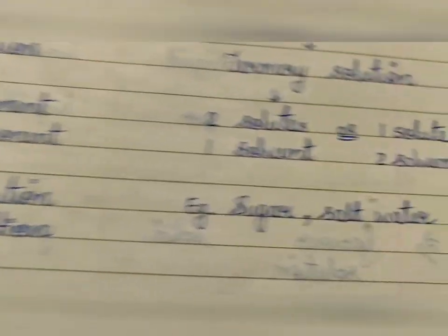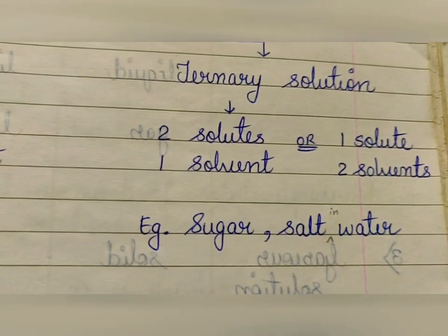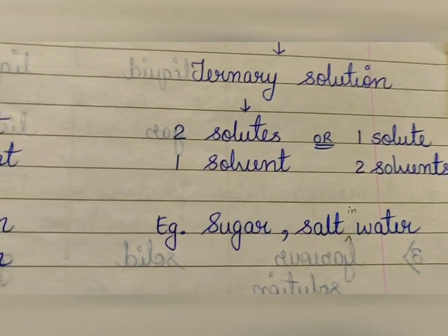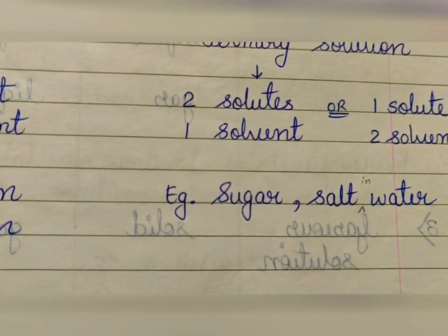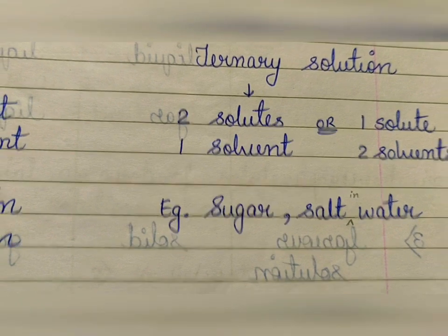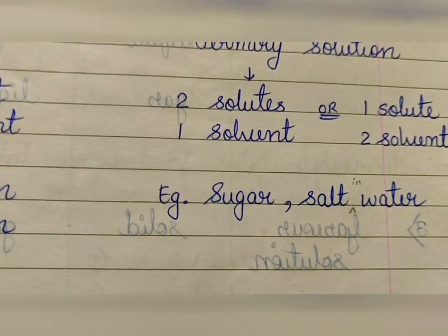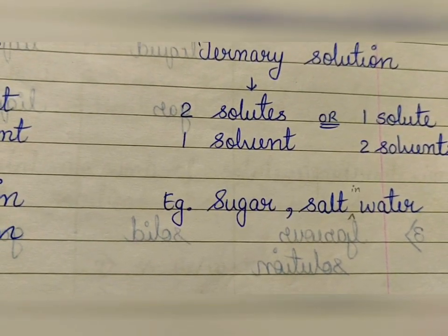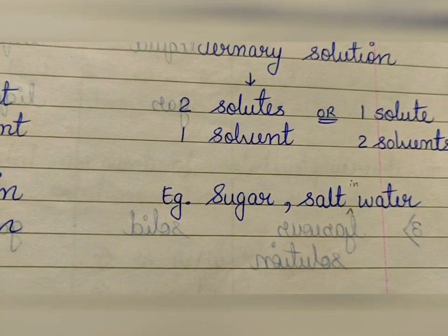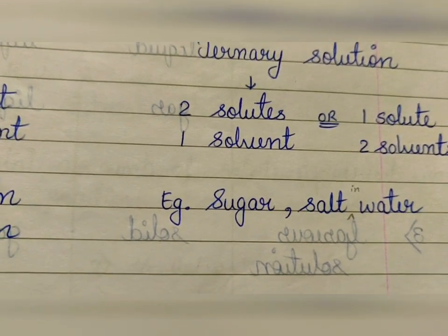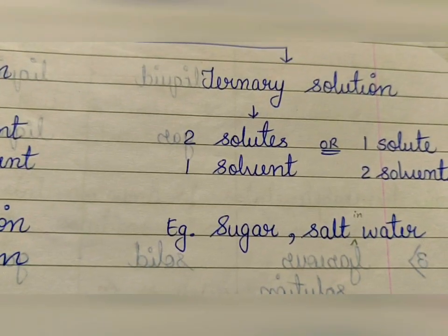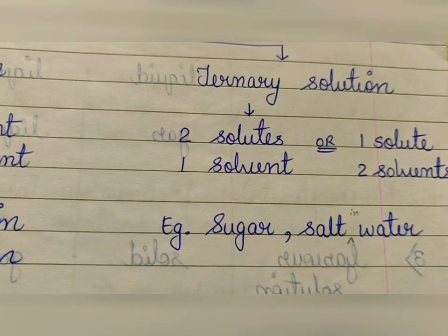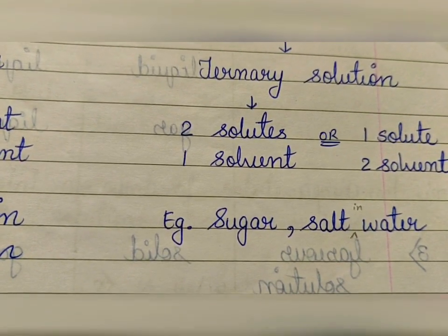The next category is ternary solution — two solutes and one solvent, or one solute and two solvents. For example, if you dissolve both sugar and salt together in water, that is a ternary solution.